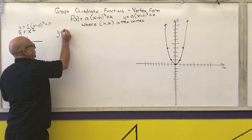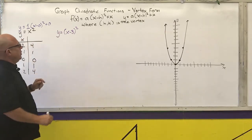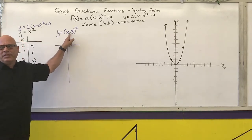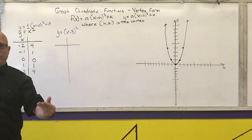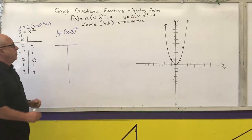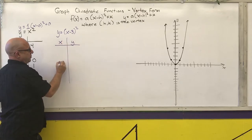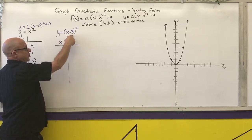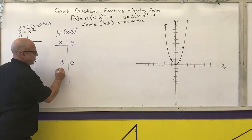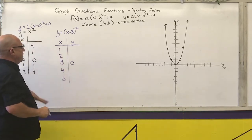Next one is y equals x minus 3 squared. The five points that work nicely are whatever makes what's inside the parenthesis equal to negative 2, negative 1, 0, 1, and 2. The easy way is to figure out what makes what's in the parenthesis 0: what minus 3 is 0? That would be 3. So 3 minus 3 is 0, 0 squared is 0. Then I add 1 to get 4, add another to get 5, subtract 1 to get 2, subtract another to get 1.